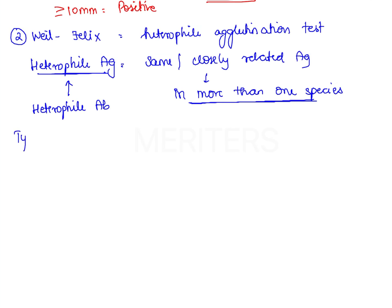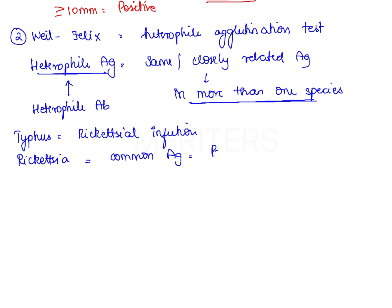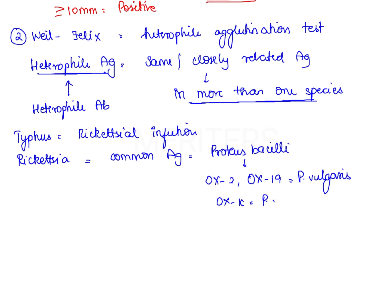The Weil-Felix test is used in the diagnosis of typhus, caused by Rickettsia — a bacterial (Rickettsial) infection. Rickettsia shares a common antigen with certain strains of Proteus bacilli: Ox 2 and Ox 19 strains of Proteus vulgaris, and Ox K strains of Proteus mirabilis. These shared antigens are the heterofile antigens, and the antibodies produced in typhus patients agglutinate with these Proteus strains.